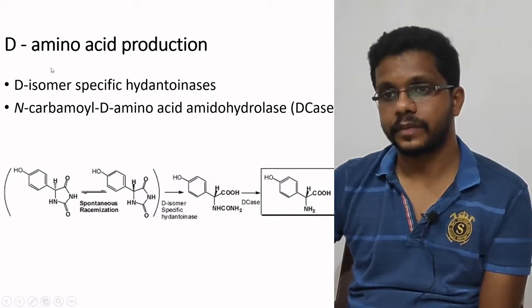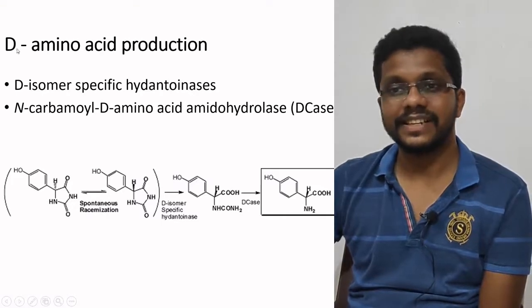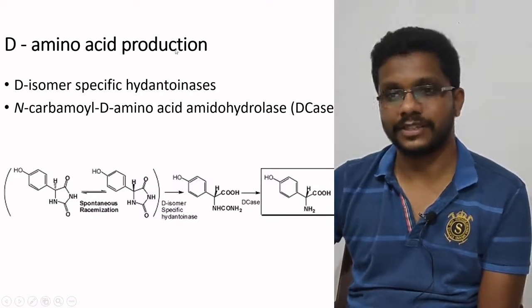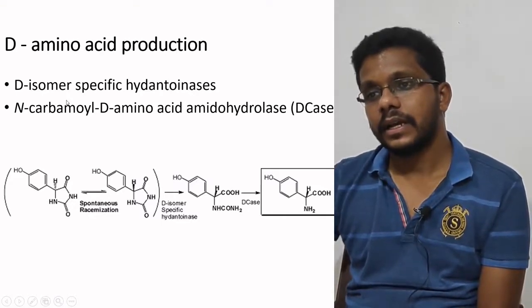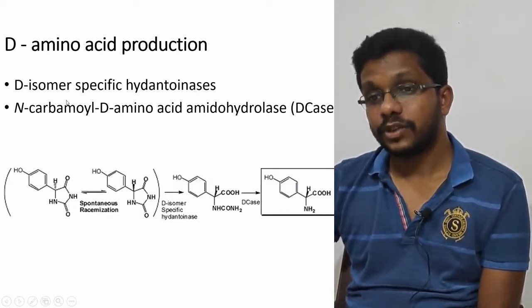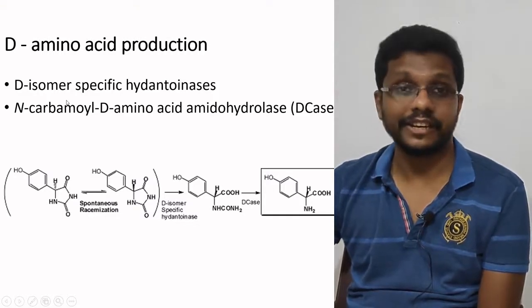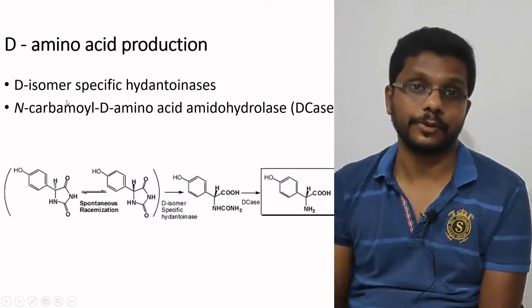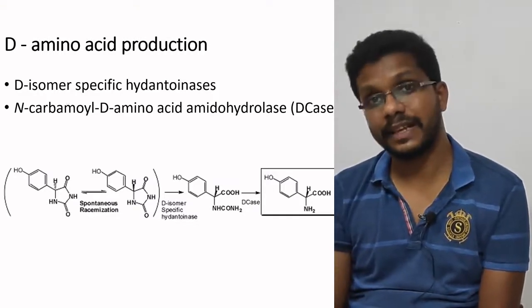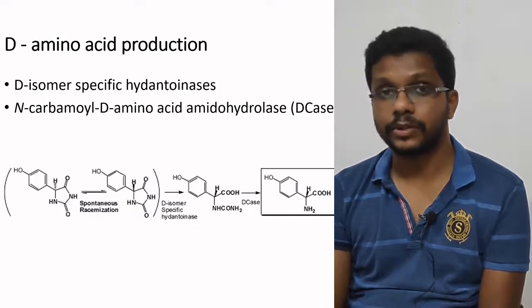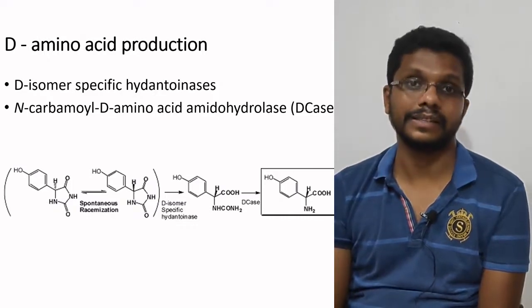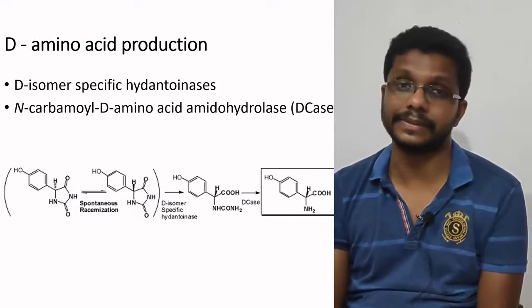I would like to talk about a few more applications of immobilized enzymes. The first one is D-amino acid production. The production of D-amino acids is very difficult using chemical processes because most chemical reactions do not have the required stereo-specificity.